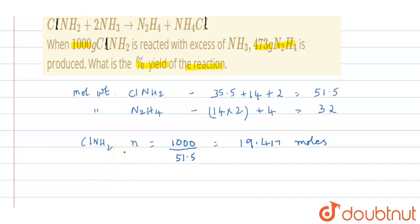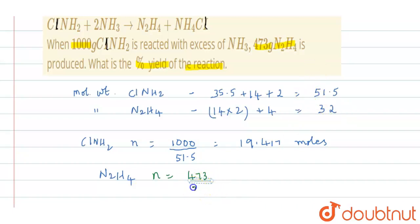Now let us calculate the moles of N2H4. The number of moles equals the weight given, which is 473, divided by its molecular weight, which is 32. You get the value 14.781 moles of N2H4.